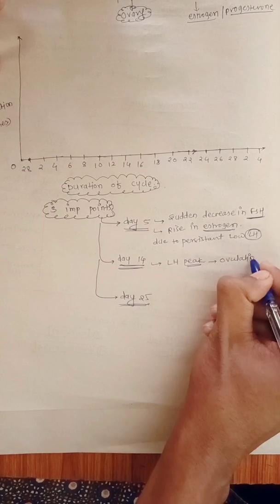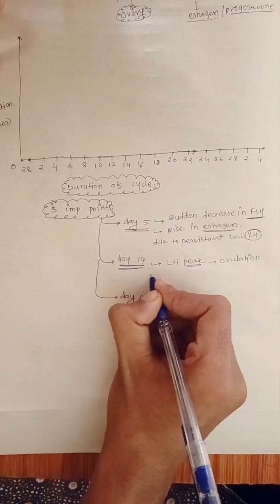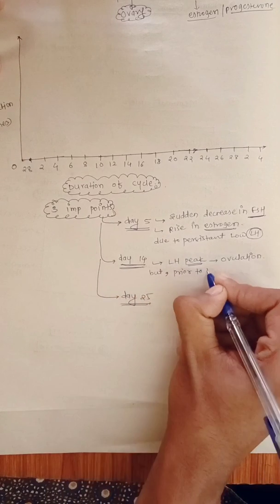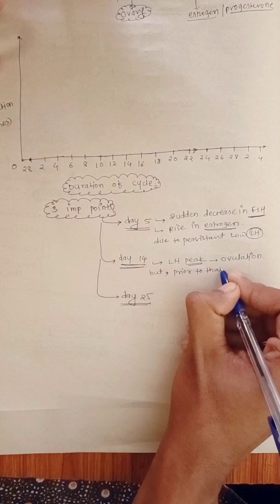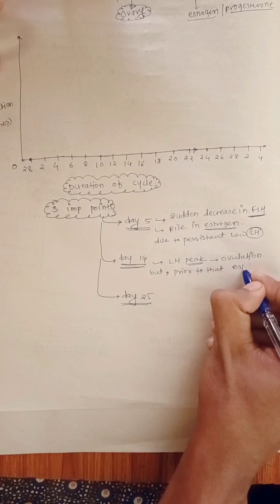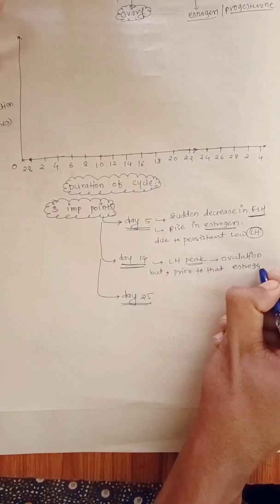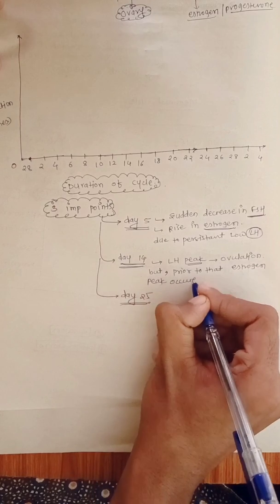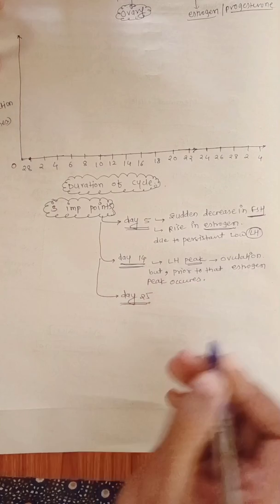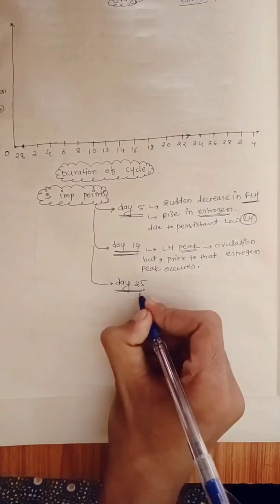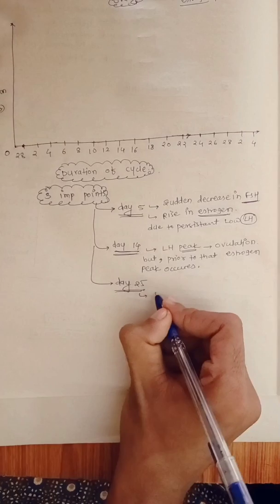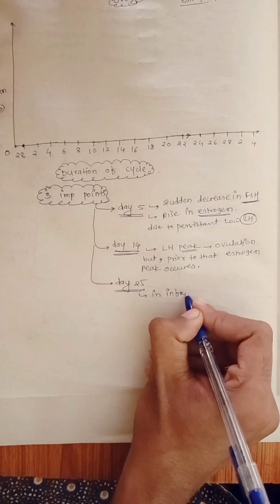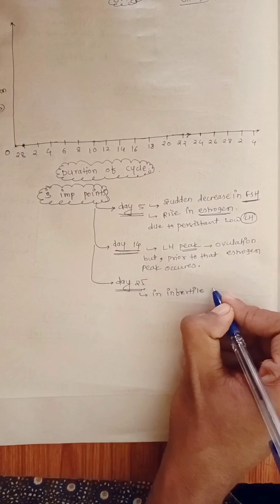On day fourteen, an LH peak occurs, due to which ovulation occurs. But prior to the LH peak, there must be another peak — that is, an estrogen peak must occur before the LH peak for ovulation to happen. This estrogen peak occurs twenty-four to thirty-six hours before the LH peak.